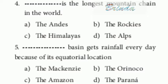Fourth question: dash is the longest mountain chain in the world. Options are: the Andes, the Rockies, the Himalayas, the Alps. The answer is the Andes. Fifth question: dash basin gets rainfall every day because of its equatorial location. Options are: the Mackenzie, the Orinoco, the Amazon, the Parana. The answer is the Amazon — they get four o'clock rain there.